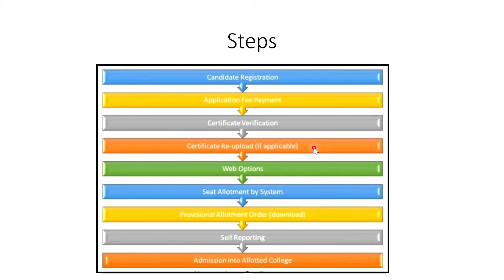You can choose a specific college or university. You can choose based on your marks and local category status. The process is completely done online. If you can't get a particular university, you can get a provisional allotment order for a specific university.